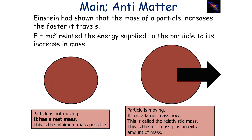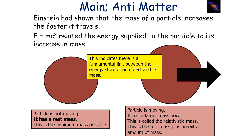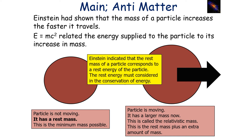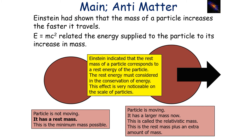Einstein showed that the mass of a particle increases the faster it travels. When a particle is not moving, it has a rest mass, which is the minimum mass possible. A moving particle has a larger mass called the relativistic mass — the rest mass plus an extra amount. This indicates a fundamental link between the energy store of an object and its mass. Einstein indicated that the rest mass of a particle corresponds to its rest energy, and this rest energy must be considered in the conservation of energy.